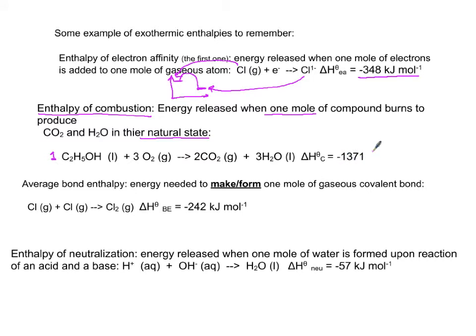Now this combustion is minus 1371 kilojoules per mole. Every one mole of ethanol produces this much energy. Combustion makes sense to be exothermic. All your fossil fuels are exothermic reactions.